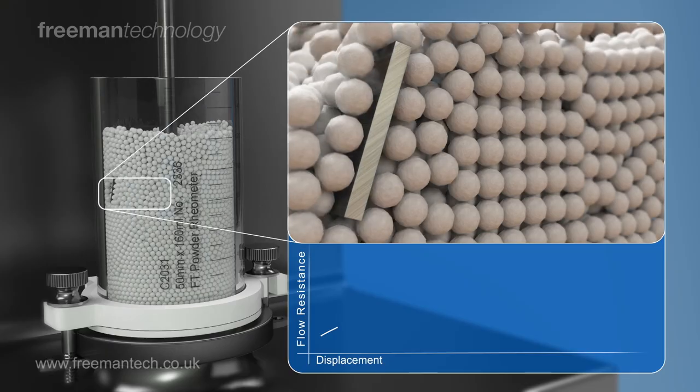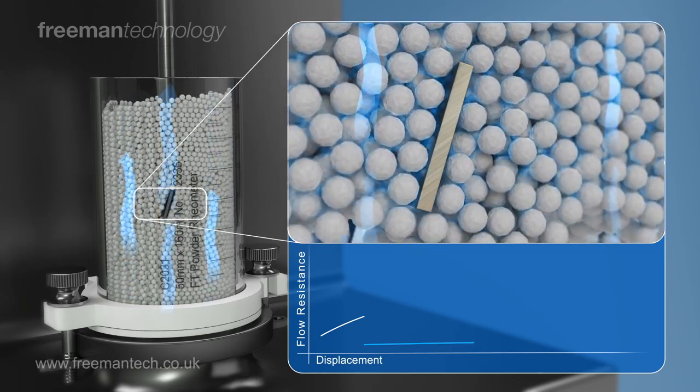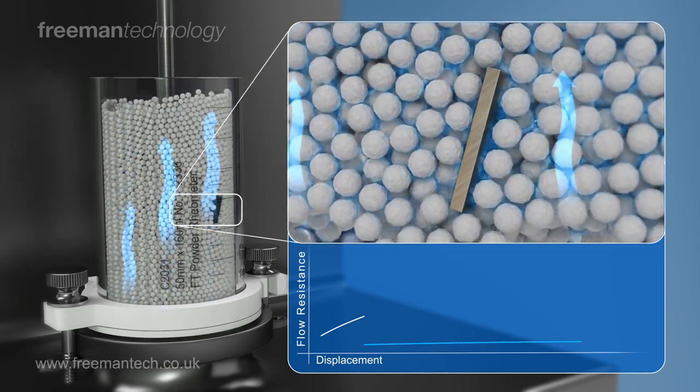Perhaps the most important external variable that influences powder behavior is aeration. The introduction of air into a powder column or the aerated nature of a powder as it discharges from a silo or is blended in a high shear blender changes the bulk flow properties.